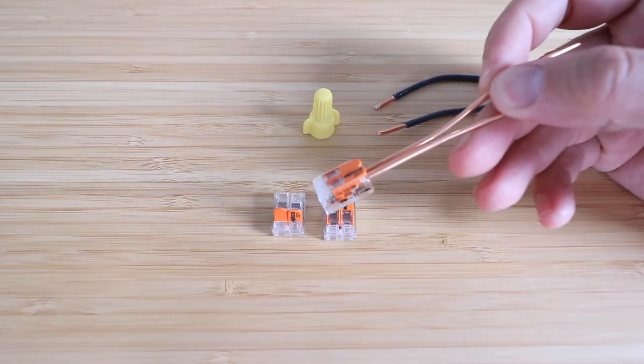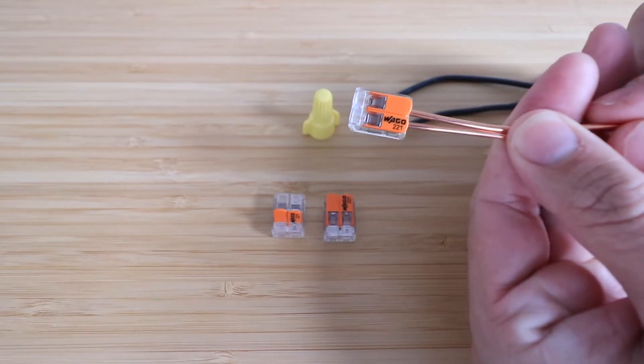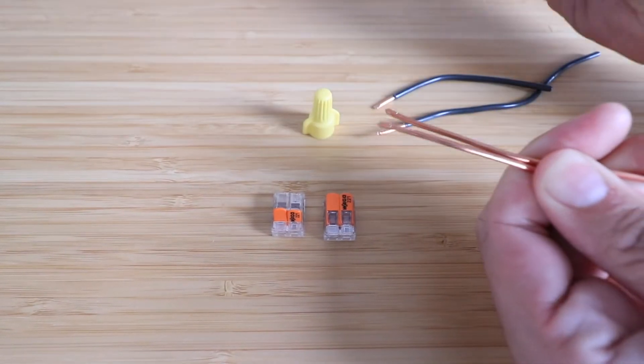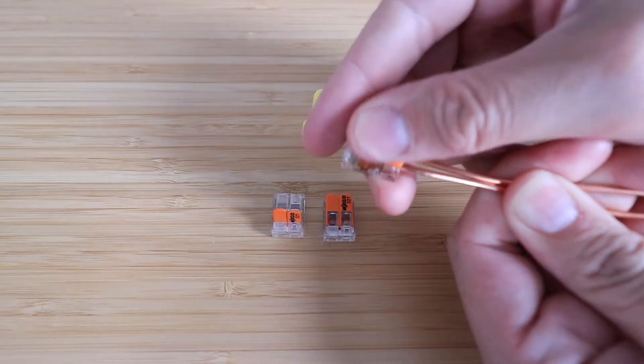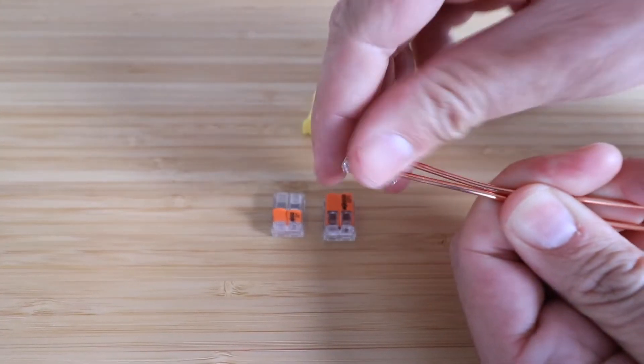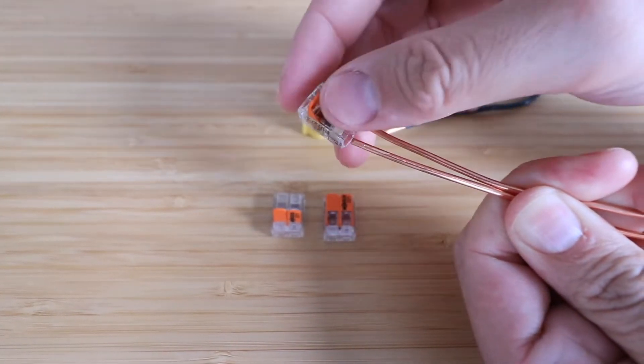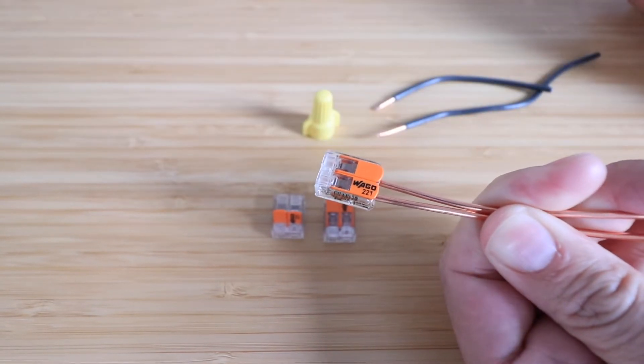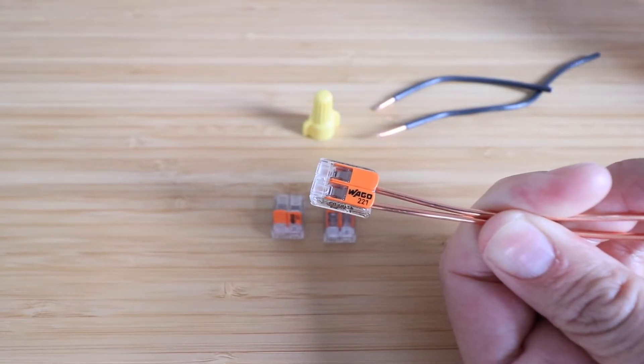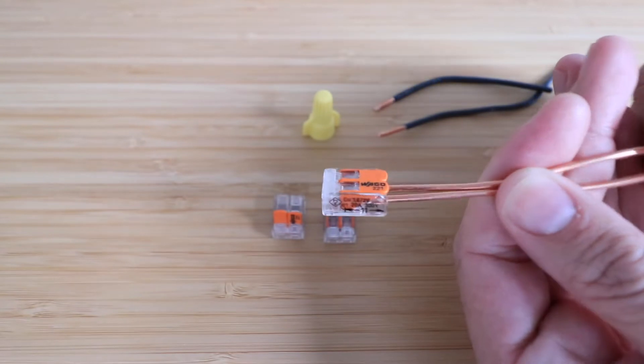But where these really shine is if you need to remove these wires. All you have to do is undo that, and then you can put those back in. So you just undo these two levers, and then I can put those back in like that. So it's really easy to take the wires in or out or do whatever you need to do.